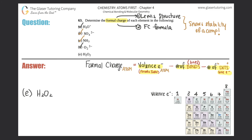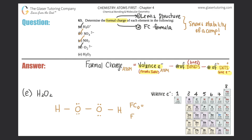Part E: H₂O₂. The Lewis structure is H−O−O−H with two lone pairs on each oxygen. Now for the formal charges: the two oxygens are identical — each has two bonds and two lone pairs. The two hydrogens are also identical — each has just one bond. So I only need to calculate formal charge for one oxygen and one hydrogen.